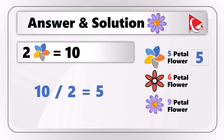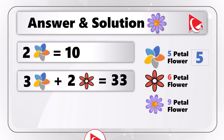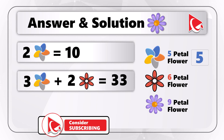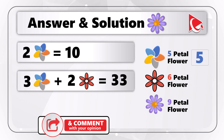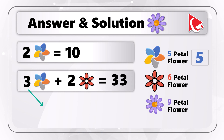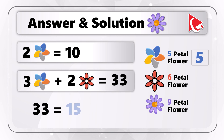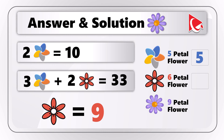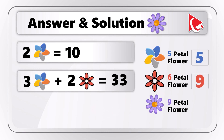Having this value handy, now we can calculate the value of the six-petal flower. We know the five-petal flower equals 5, so let's simplify: 3 five-petal flowers plus 2 six-petal flowers equals 33. Three five-petal flowers equals 15, so we can build a new expression: 33 equals 15 plus 2 six-petal flowers, which means the six-petal flower equals 9.